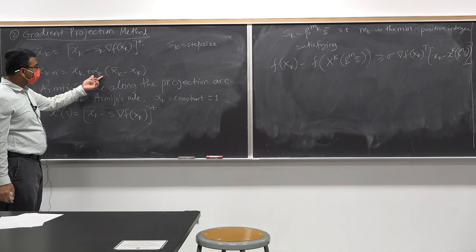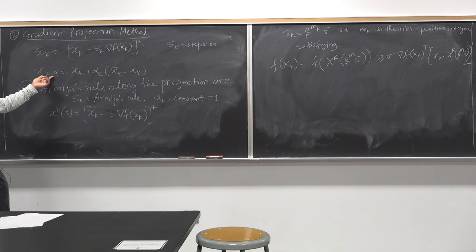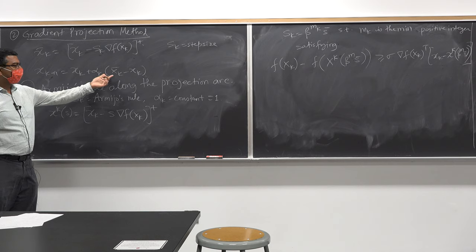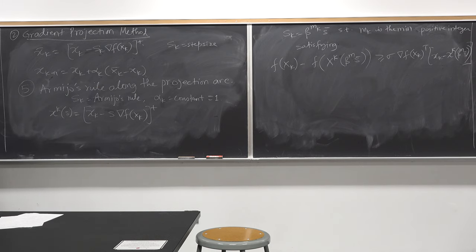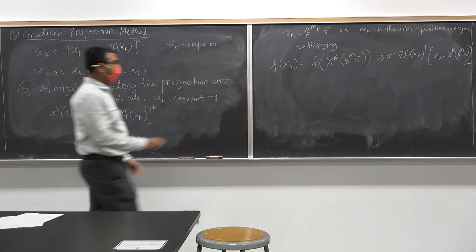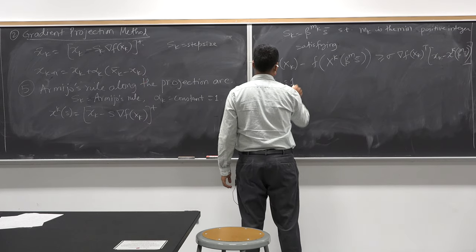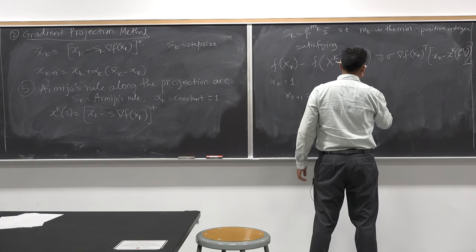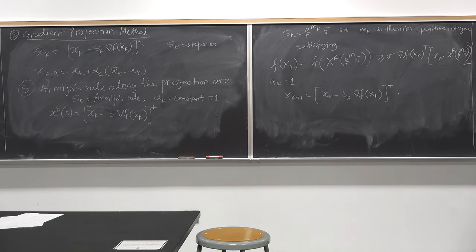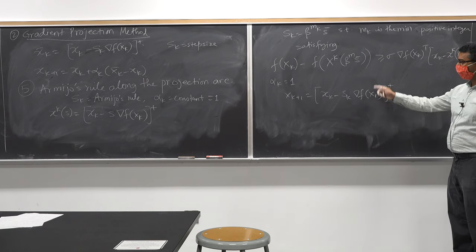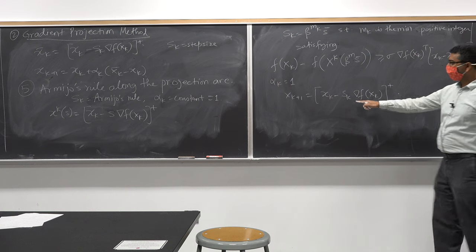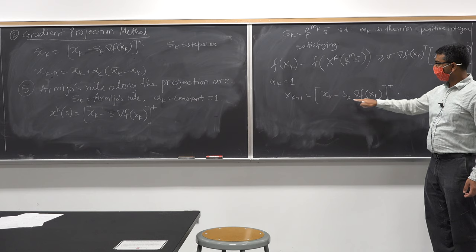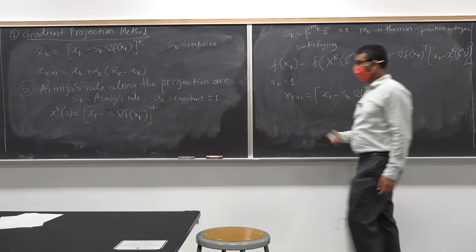When α_k = 1, what is the value of x_{k+1}? It's equal to x̄_k. So whenever α_k = 1, x_{k+1} is essentially the projection of x_k minus s_k times the gradient. This is the gradient projection method: you take a gradient step, project, take another step, project, and so on.